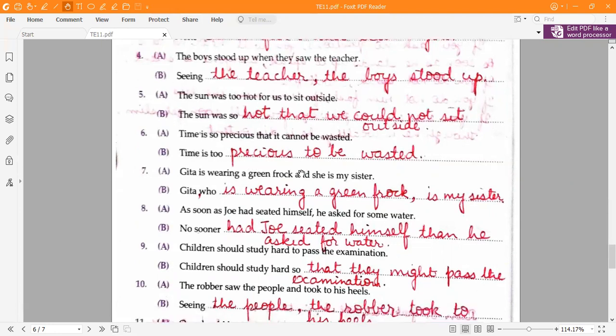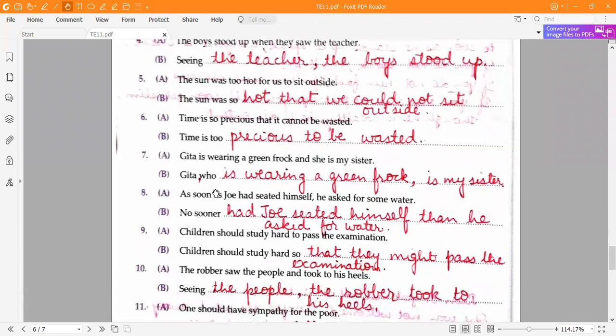Seventh one, Geeta is wearing a green frock and she is my sister. Geeta, there should be a comma after Geeta. Geeta, who is wearing a green frock, is my sister.